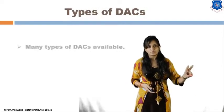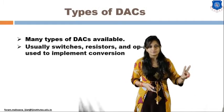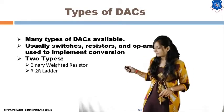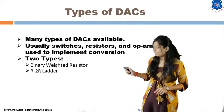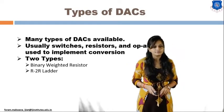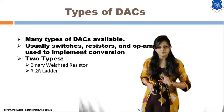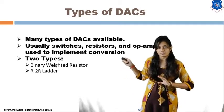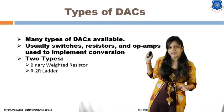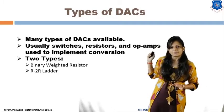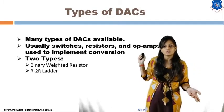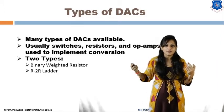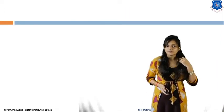There are two types of DAC: binary weighted resistor and R2R ladder. Both types use switches, resistors, and op-amps for the conversion of a digital signal into an analog signal.